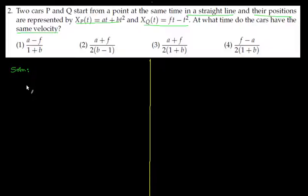So let us look at the equations. x_p(t) which is equal to at + bt² - let us say this is equation number 1. And you have got x_q(t) which is equal to ft - t² - let us say this is equation number 2.